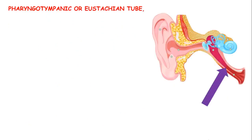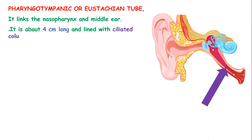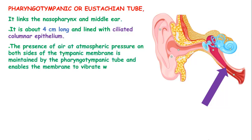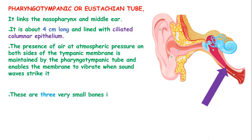The pharyngeal tympanic or Eustachian tube is a tube which links the nasopharynx and the middle ear. It is about 4 cm long in an adult and lined with ciliated columnar epithelium. The presence of air at atmospheric pressure on both sides of the tympanic membrane is maintained by the pharyngeal tympanic tube, and this enables the membrane to vibrate when sound waves strike it. This membrane is normally closed and opens when there is a pressure difference.